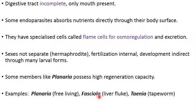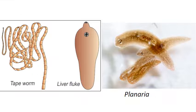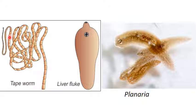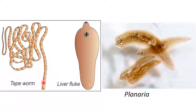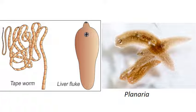Examples of Platyhelminthes: Planaria — free-living flatworm with high regeneration capacity; Fasciola — the liver fluke, which resides in the bile ducts of the liver; and Taenia — the tapeworm, which shows pseudo-metamerism (false segmentation), with each segment called a proglottid. The scolex (head) bears suckers and hooks for attachment to the intestinal wall. The liver fluke has an incomplete digestive system, while the tapeworm has no digestive system — it absorbs ready-made food in the intestine.